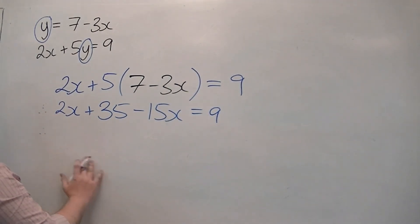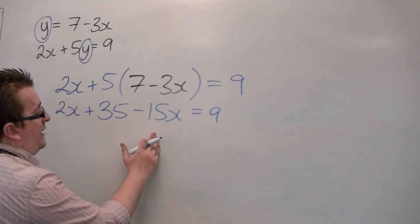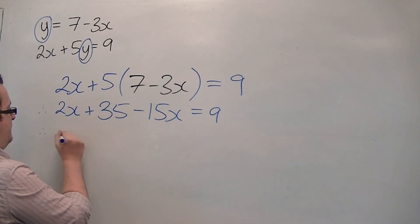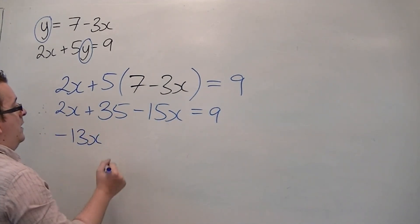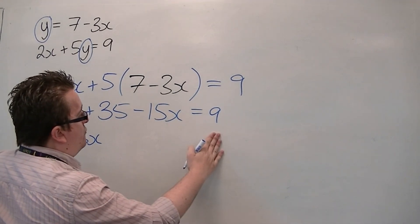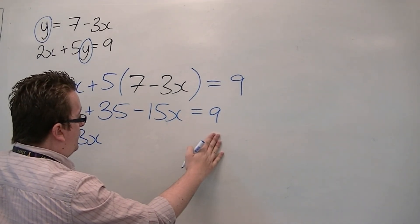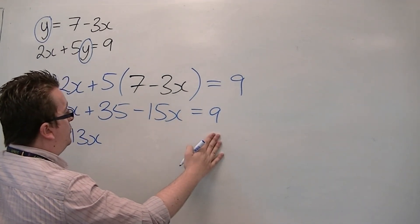So if we tidy that up, we get 2x take away 15x is minus 13x. And if I take 35 away from 9, I get minus 26.